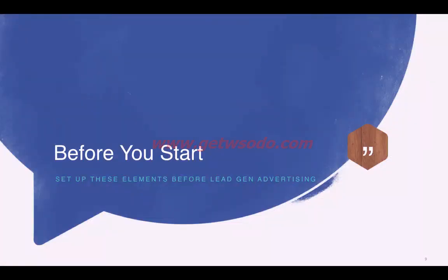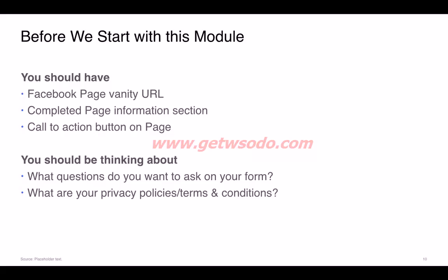Before the lead generation advertising campaign can begin, there are a few prerequisites. Your Facebook page should have a vanity URL. The page information should be completed with all relevant information. The call-to-action button on the page should be activated with the proper call to action. You should also think about what questions you want to ask on your form, and have any privacy policies or terms and conditions ready, as they are also necessary for lead ads.